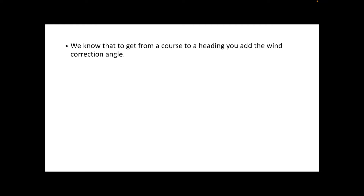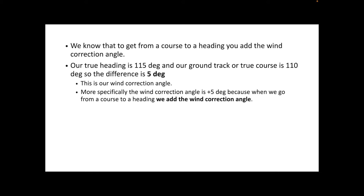To get from a course to a heading, we add our wind correction angle. Our true heading is 115 degrees and our ground track, or true course, is 110 degrees — so the difference is 5 degrees. This is our wind correction angle. More specifically, it's plus 5, because going from a course to a heading we add the wind correction angle: 110 plus X equals 115, so X is 5 degrees. That means our mark on the E6B will be 5 degrees to the right of the center line.